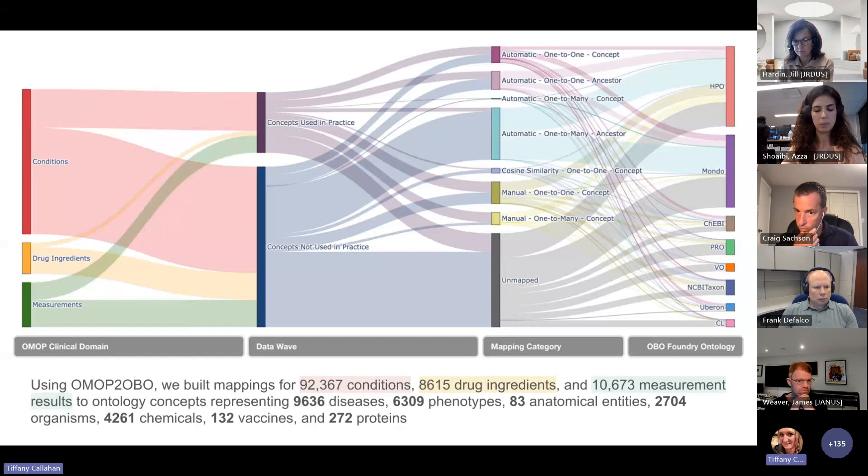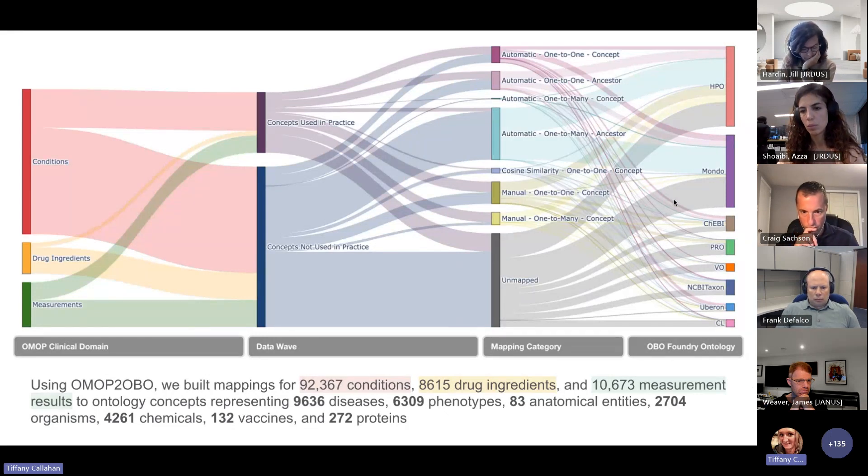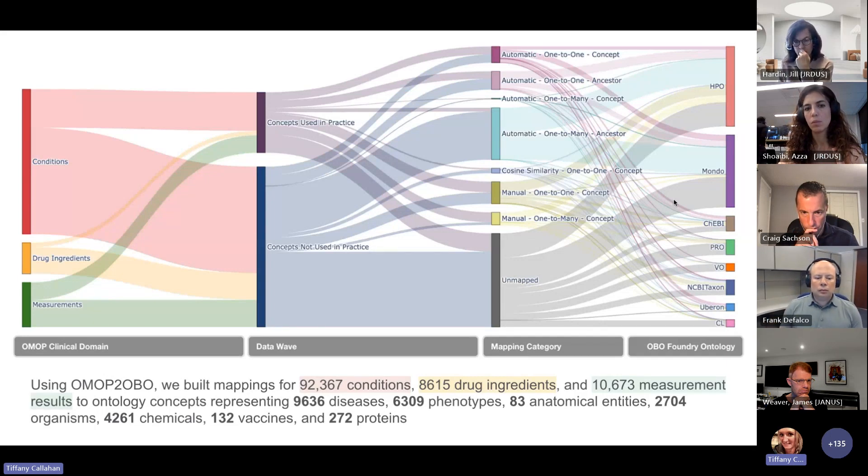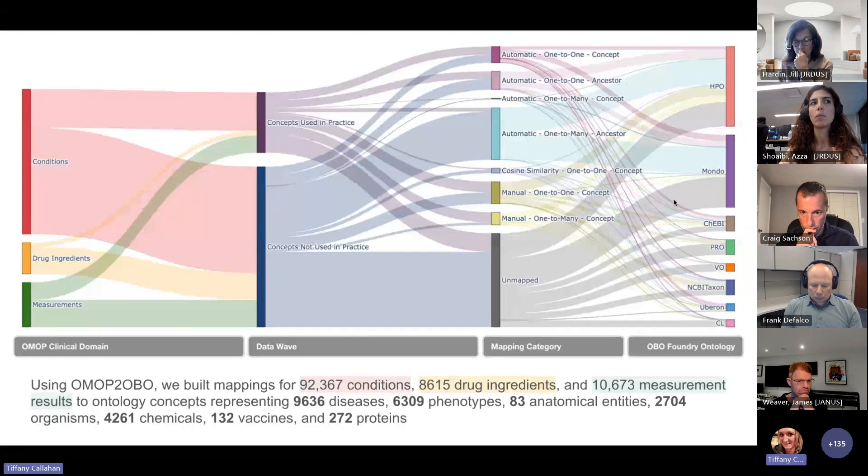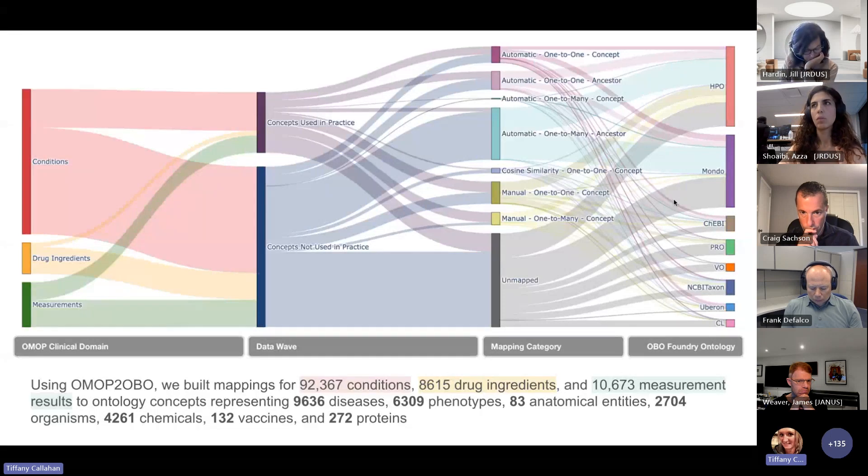And using this system, we built mappings for over 92,000 condition concepts, 8,600 drug ingredients, over 10,000 measurement results, to OBO ontology concepts that represented over 9,000 diseases, over 6,000 phenotypes, 83 anatomical entities, 2,700 organisms, 4,200 chemicals, 132 vaccines, and 272 proteins. So a really robust set of mappings between the OMOP concepts to these OBO Foundry ontologies.